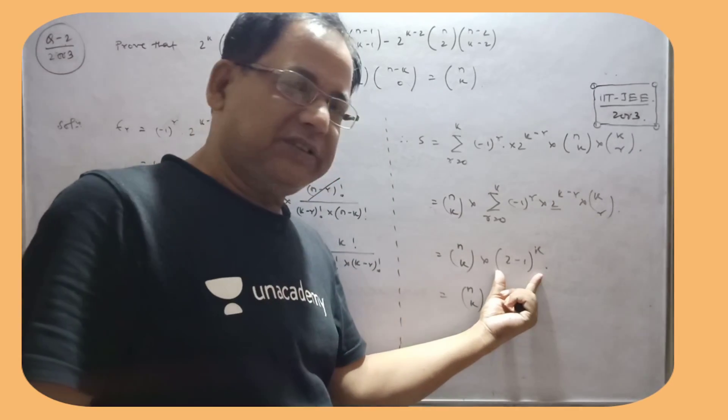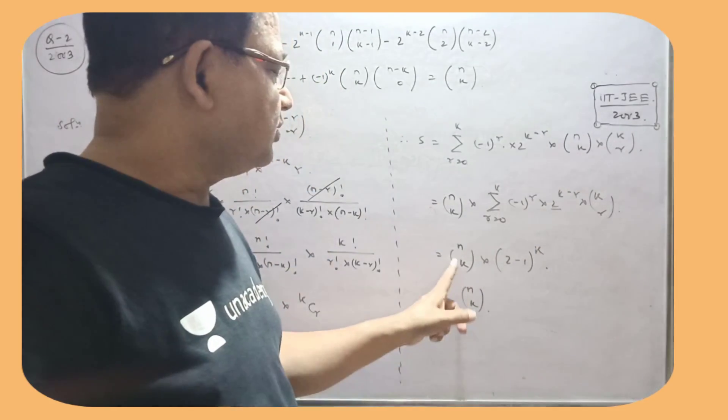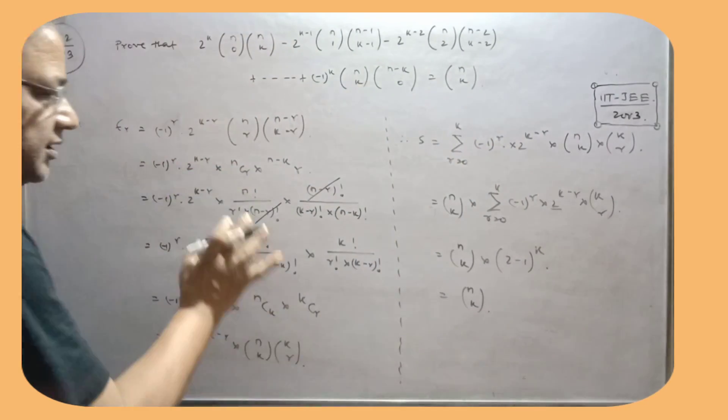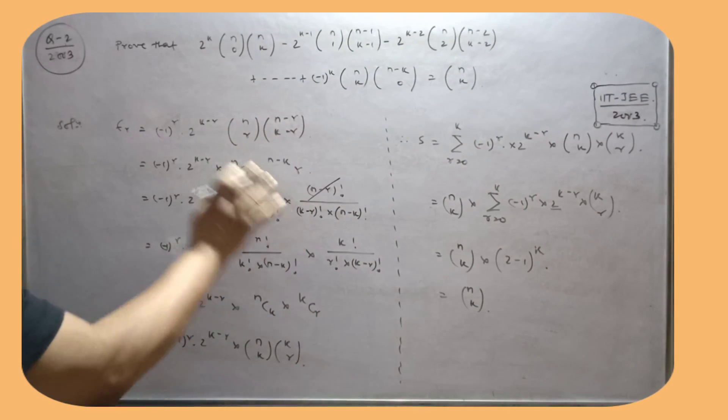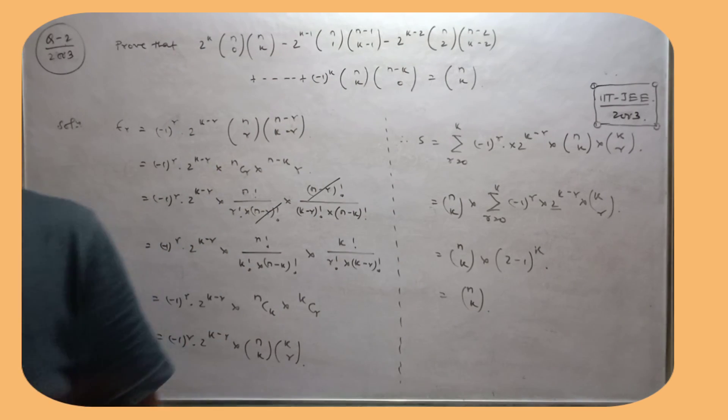The sum of the rth term will represent this: 2 minus 1 whole to the power k, that is this one. So this is nCk. This is equal to nCk. Write the rth term, then simplify, nothing else.